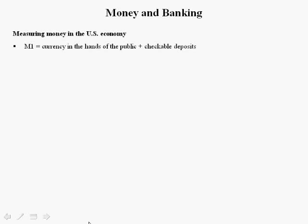There are several ways to define money. We're going to talk about two in this slide. M1 is defined to be the currency in the hands of the public plus checkable deposits.